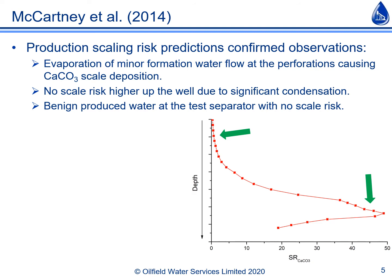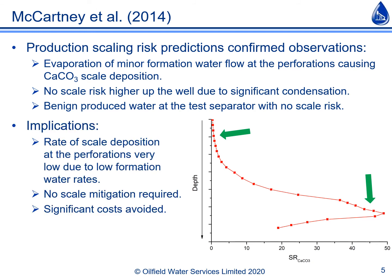So the study confirmed the cause of the scale, but was scale mitigation necessary? In this case, no — because given the very low rate of production of formation water, the rate of accumulation of scale was also very low; in fact, too low for scale mitigation to be required. This meant that the asset could avoid the costs associated with mitigation, which would have been significant.